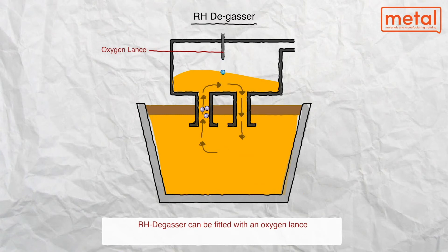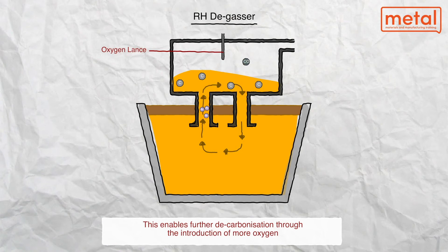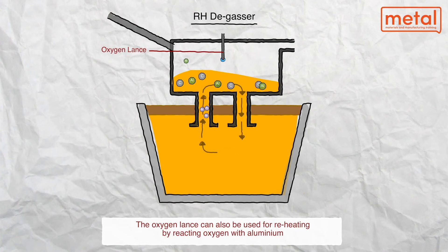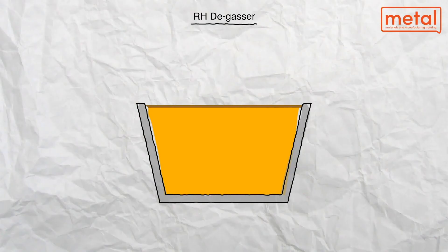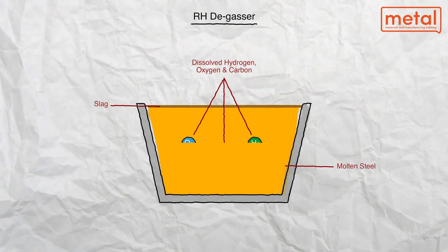Aluminium reacts with oxygen exothermically and contributes to maintaining the ladle at a temperature suitable for subsequent casting. Aluminium oxide formed adds to the slag, but some is retained in the melt. This can lead to unacceptable levels for tin plate grades of steel.